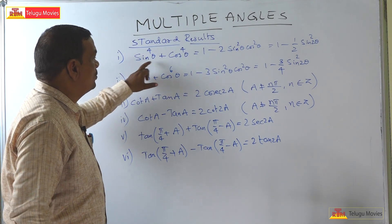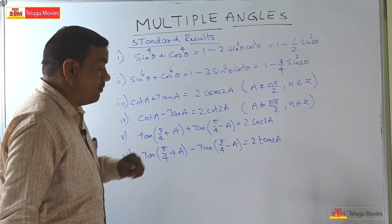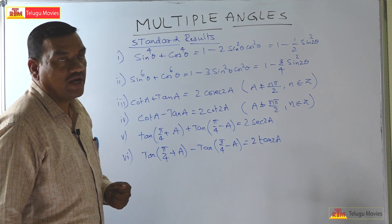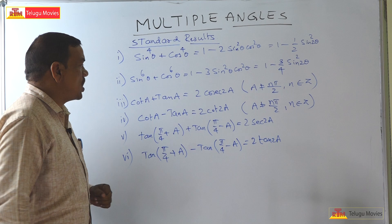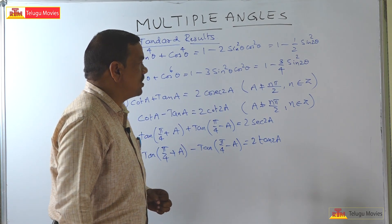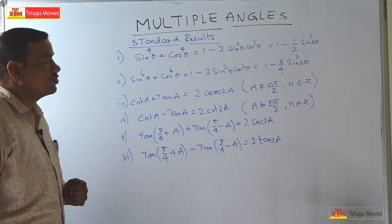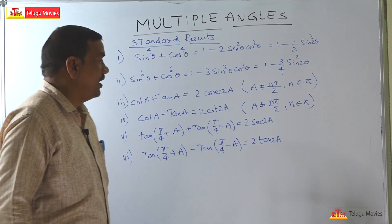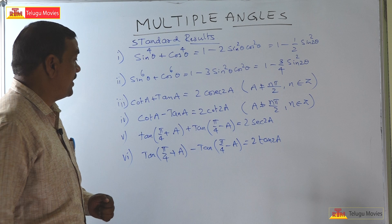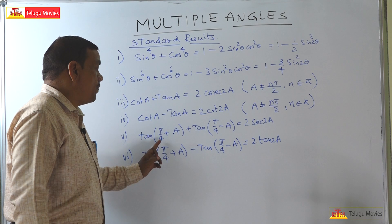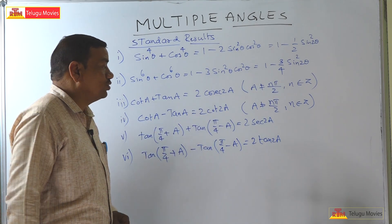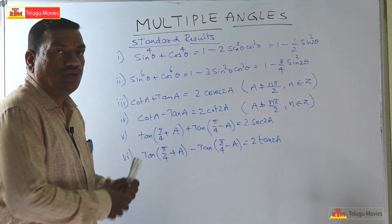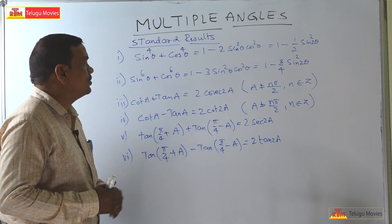One standard formula is sin⁴θ + cos⁴θ = 1 − 2sin²θ cos²θ = 1 − (1/2)sin²2θ. Another formula is sin⁶θ + cos⁶θ = 1 − 3sin²θ cos²θ = 1 − (3/4)sin²2θ. Also: cot A + tan A = 2cosec 2A, where A ≠ nπ/2, n ∈ ℤ; cot A − tan A = 2cot 2A; tan(π/4 + A) + tan(π/4 − A) = 2sec 2A; and tan(π/4 + A) − tan(π/4 − A) = 2tan 2A. Please note down these formulas.